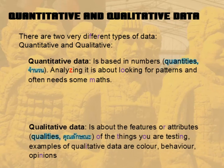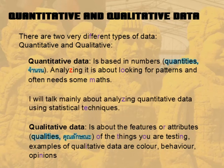Qualitative data, on the other hand, is about features or attributes — the qualities of something. So if you're looking at animals and you want to see different types of animal and how they survive in different places, the qualities they have, like their body size or their fur, are not numbers; they are things you must write down. We will talk mainly about analyzing quantitative data because it's the most common one we use in science, but there are always different examples of qualitative analysis, and there are even ways to combine the two.